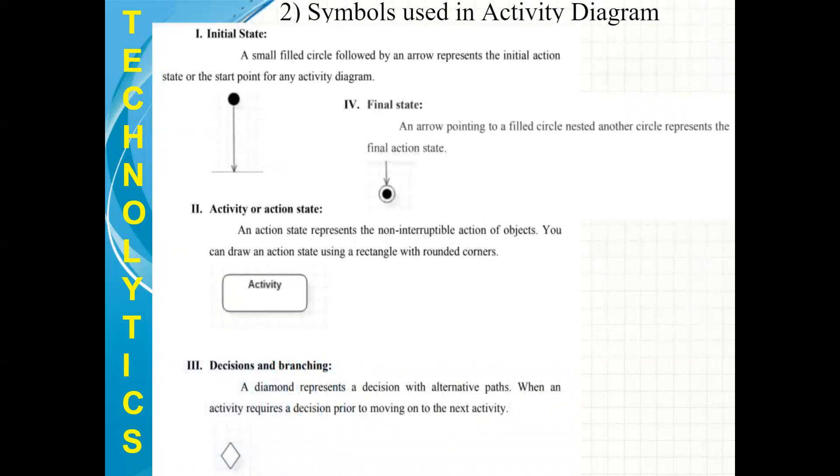Now, symbols which we are going to use in Activity Diagram are Number 1, Initial State. Whenever we want to start with an Activity Diagram, the filled circle is there. We have to use this to start it. Next is Activity or Action State. Surrounded rectangle is there which we can use for certain action. Next is Decision and Branching. In most of the diagrams we use Diamond Shape to denote Decisions and Branching. Here also we are going to do the same. And the final state we are going to show it with filled circle nested another circle. These are the basic shapes.